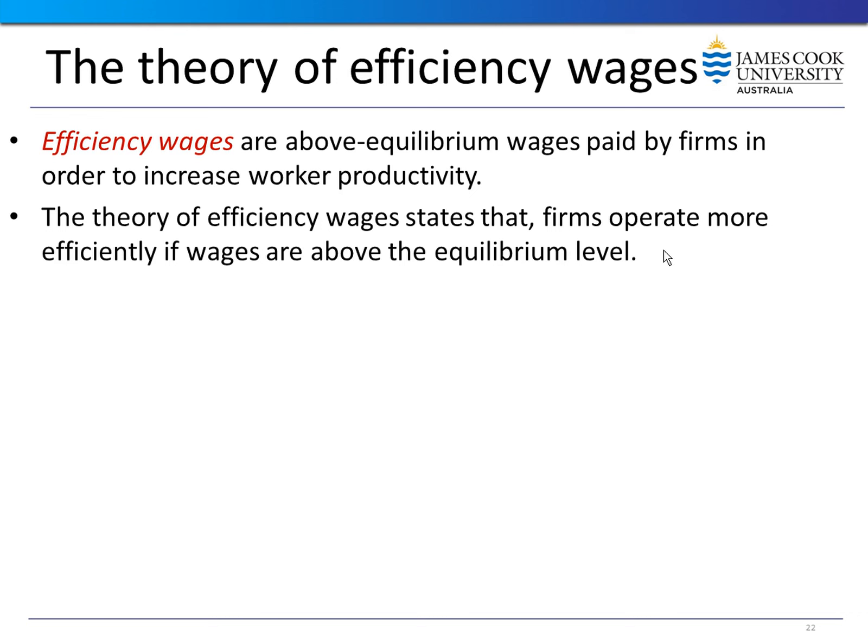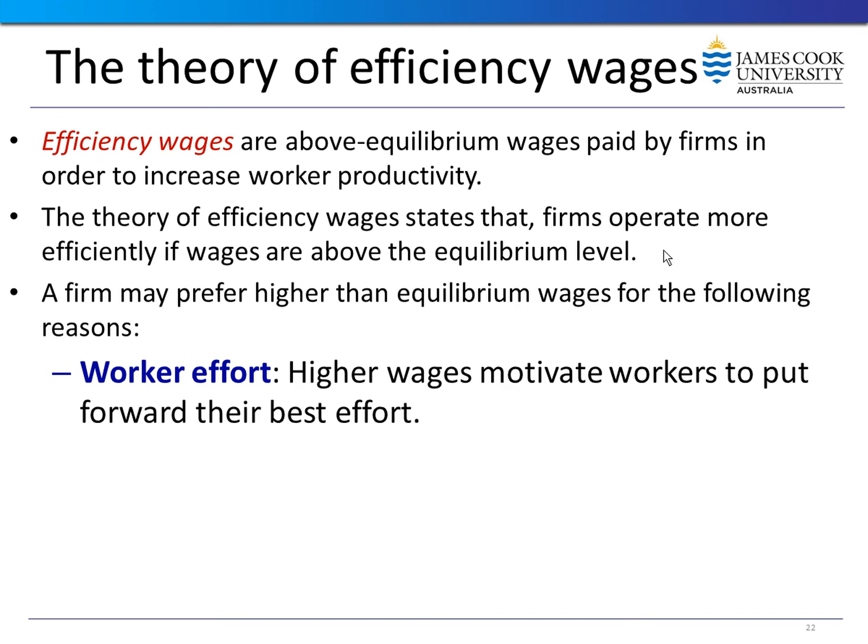Efficiency wages are above-equilibrium wages paid by firms to increase worker productivity. The theory of efficiency wages states that firms operate more efficiently if wages are above equilibrium. Firms offer higher wages hoping for two outcomes: first, workers will exert more effort; second, the higher wages will attract more capable workers. These two reasons justify firms offering wages above the equilibrium level — for better worker effort and worker quality.